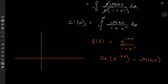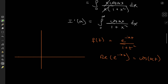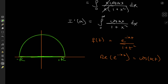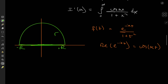We'll define the semicircular contour of radius r, with negative and positive r marking the diameter. I'll call the semicircular arc uppercase gamma and the entire contour C. We notice that the contour encloses only one pole — the poles of the function are z equal to plus and minus i, but we'll only concern ourselves with the pole z equal to i in the upper half of the complex plane.